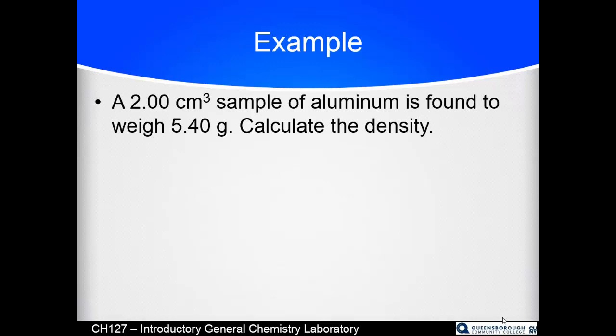For example, if we have a 2.00 cubic centimeter, cc, milliliter, however you want to say it, sample of aluminum that is found to weigh 5.40 grams, calculate the density of aluminum. Easy enough. 5.4 grams over the 2.00 milliliters gives us 2.70 grams per milliliter, which is, in fact, the density of aluminum. So if you had a sort of silvery, shiny-ish piece of metal, and it had a density of 2.70 grams per milliliter, you could surmise that it is highly likely to be aluminum, or aluminium if you're from England.